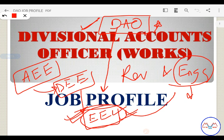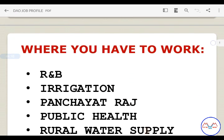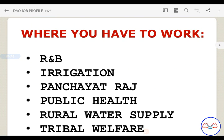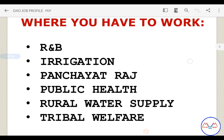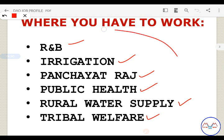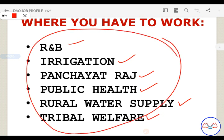Regarding the job profile: the DAO works in the Executive Engineer's office across various engineering departments — R&B, Irrigation, Panchayati Raj, Public Health, Rural Water Supply, and Tribal Welfare. The DAO works exclusively within these engineering department offices.